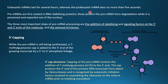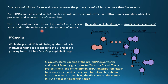Eukaryotic mRNA lasts for several hours, whereas prokaryotic mRNA lasts no more than about five seconds, because in prokaryotes transcription and translation occur simultaneously. Pre-mRNAs are first coated in RNA-stabilizing proteins, which protect the pre-mRNA from degradation while it is processed and exported out of the nucleus. The three most important steps of pre-mRNA processing are: addition of stabilizing proteins, signaling factors at the 5' and 3' ends of the molecule, and removal of introns.